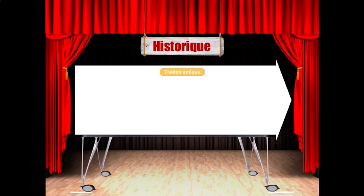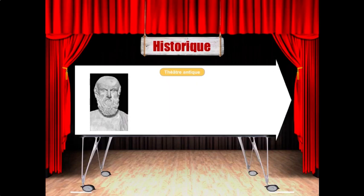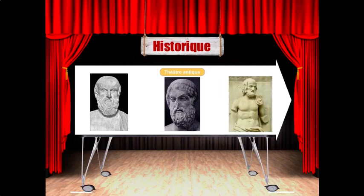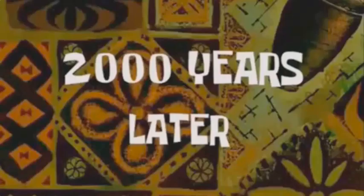On retient trois grands auteurs tragiques de cette époque : d'abord Eschyle, ensuite Sophocle et enfin Euripide.